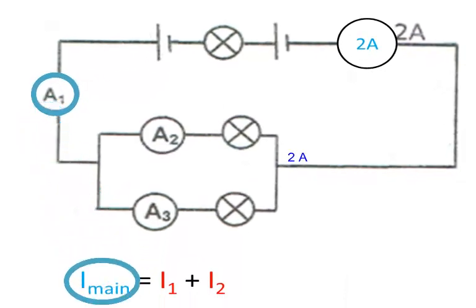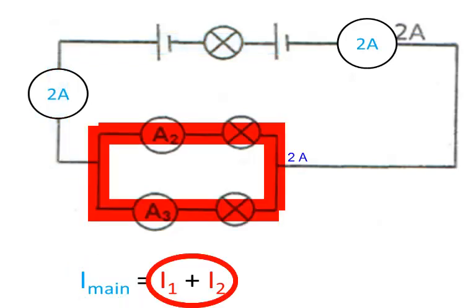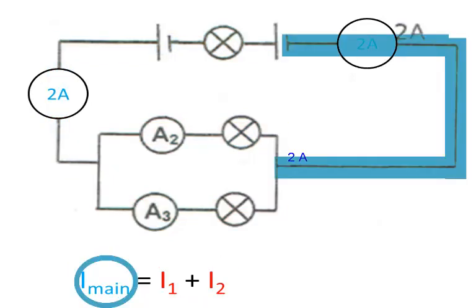Because here we have the main part of the circuit, here we have the branch part of the circuit, and then here again the main part of the circuit.